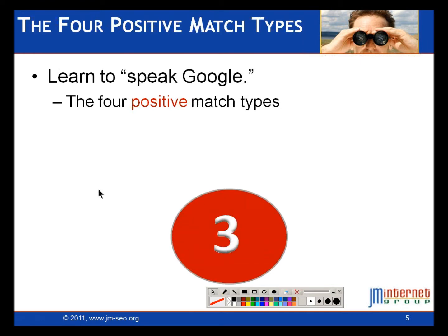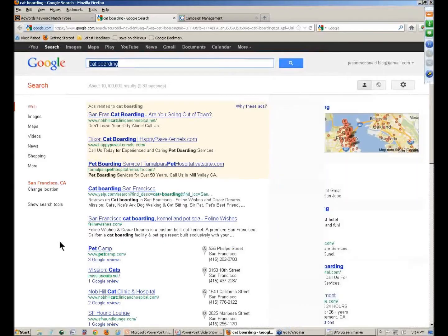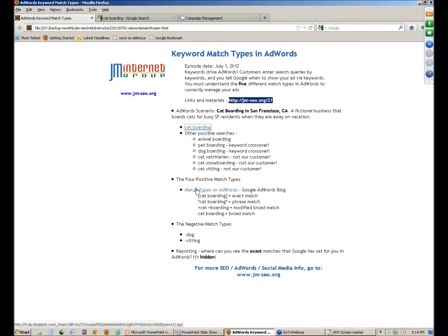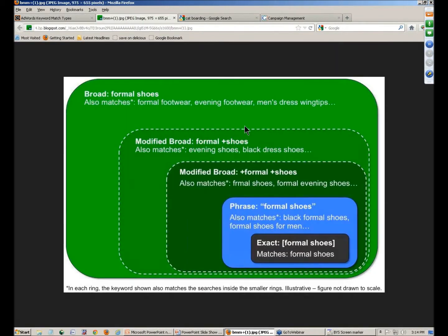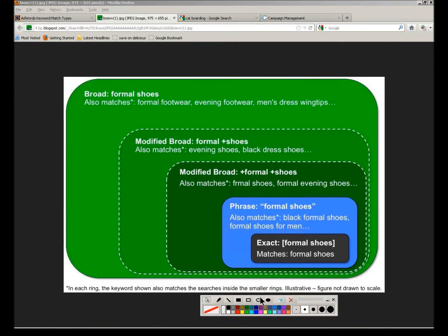Now we need to learn to speak Google — to tell Google through the AdWords interface where to set our ad. I've got a link here to the Google blog with a nice visual they built, using the term 'formal shoes.' So we have: formal shoes with no quotes, formal shoes with plus signs in front — that's called modified broad — formal shoes with quotes, and formal shoes with brackets. These are your four positive match types in Google.